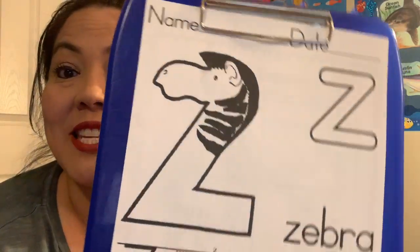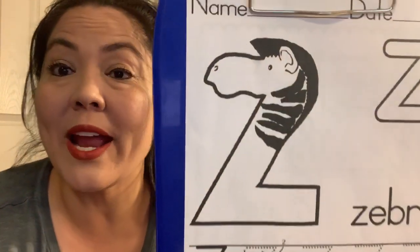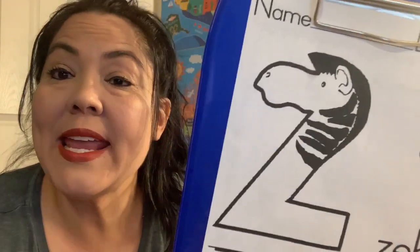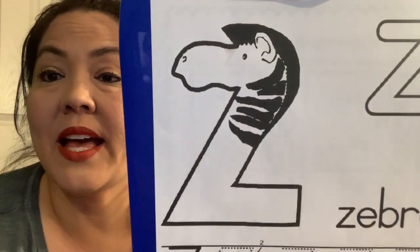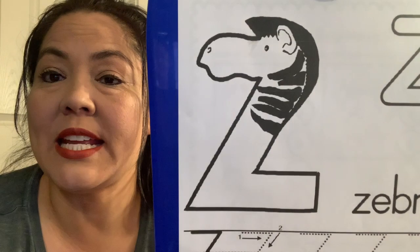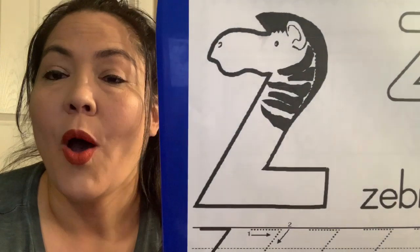Who remembers what letter we're talking about this week? It's the very last letter of the alphabet. If you said the letter Z, you are right. We get to talk about the letter Z for Zeke the Zebra.